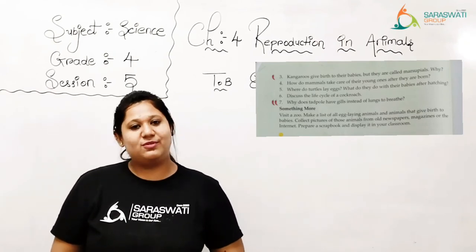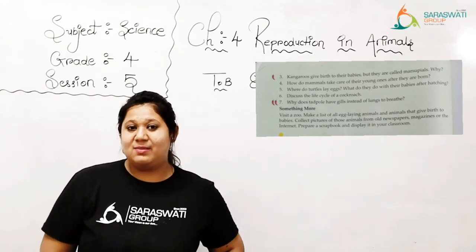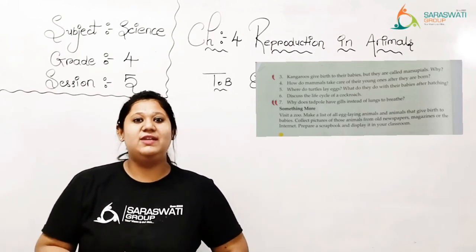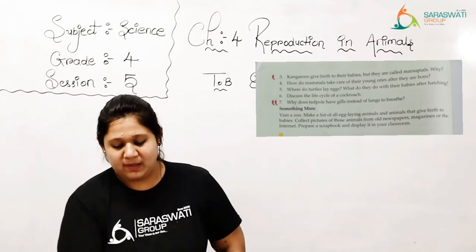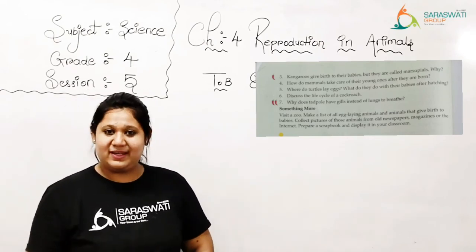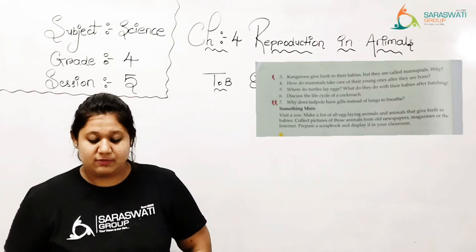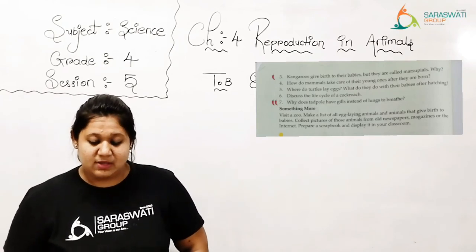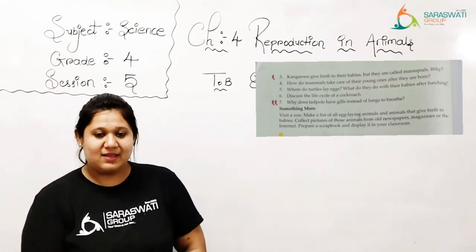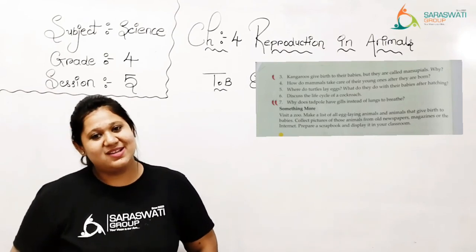Now number 4: how do mammals take care of their young ones after they are born? Even we humans are also mammals, right? Mammals take care of their babies until they can live on their own. The mother cares for them, feeds them food and protects them from predators till they can look after themselves. Some mammals like lions teach their young ones to hunt. Clear?